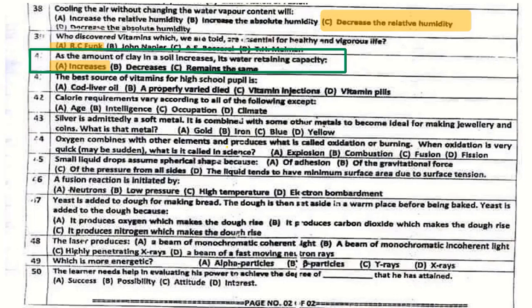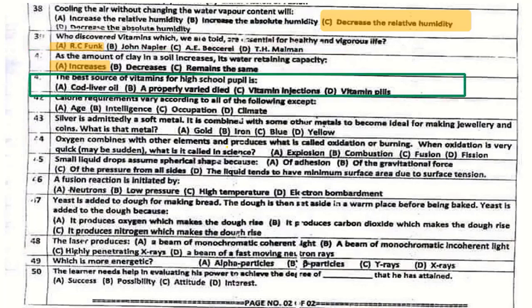Question number 41: The best source of vitamins for high school people is a properly varied diet — essentially a well-balanced diet.